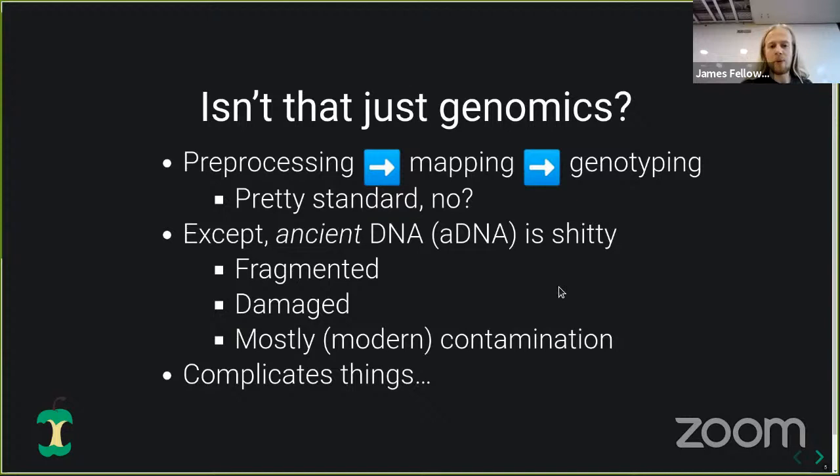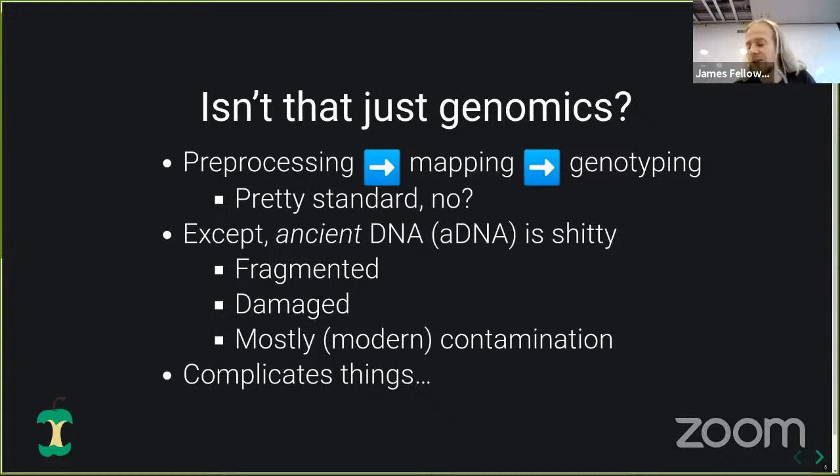You might think that three stages of pre-processing, mapping, and genotyping is pretty standard — SAREK also does that in many ways. But the difference is that ancient DNA is very, very challenging, to put it bluntly. It's very fragmented, very short, also damaged, and full of contamination from modern DNA — from ourselves or the environment around us — and this complicates things in a variety of ways.